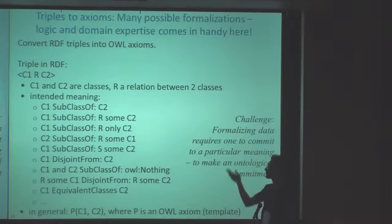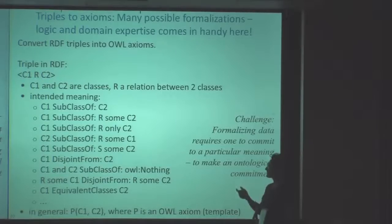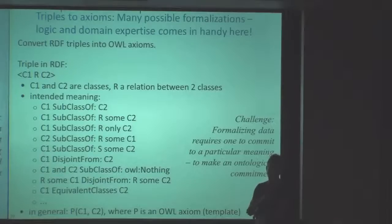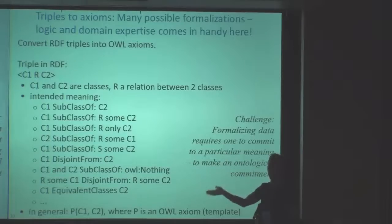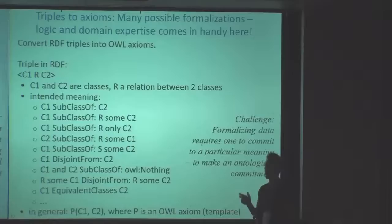There could be a good number of interpretations for a given class-one relationship class-two triple. The intended meaning could very well be that the relationship is a type relation — that every C1 is a kind of C2 — and we can formalize that in OWL by saying C1 is a subclass of C2. It could also be that C1 is a subclass of something which holds a relationship to some other thing. There are a good number of different kinds of expressions we can formulate for just this one triple. The challenge for us is to understand the data well enough to make this ontological commitment: what exactly is meant, and what's the strongest thing we can say about the triple?